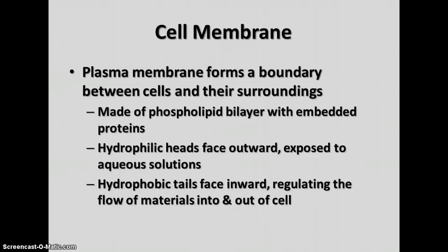The plasma membrane or cell membrane forms a boundary between cells and their surroundings. It is made of a phospholipid bilayer with proteins embedded in it. The hydrophilic heads of the phospholipids face outward, exposed to the aqueous solution inside and outside the cell, while the hydrophobic tails face inward. Very small molecules like oxygen can diffuse across the membrane fairly easily, but larger molecules have difficulty. Charged molecules can't pass through unless they use special tubes and channels.